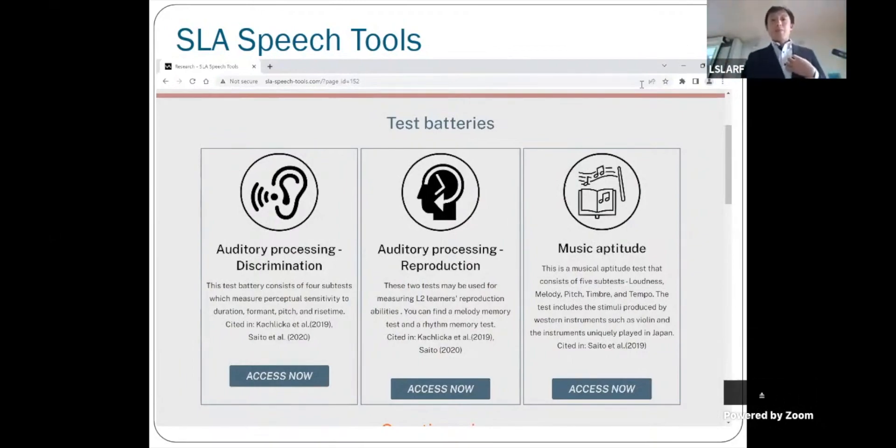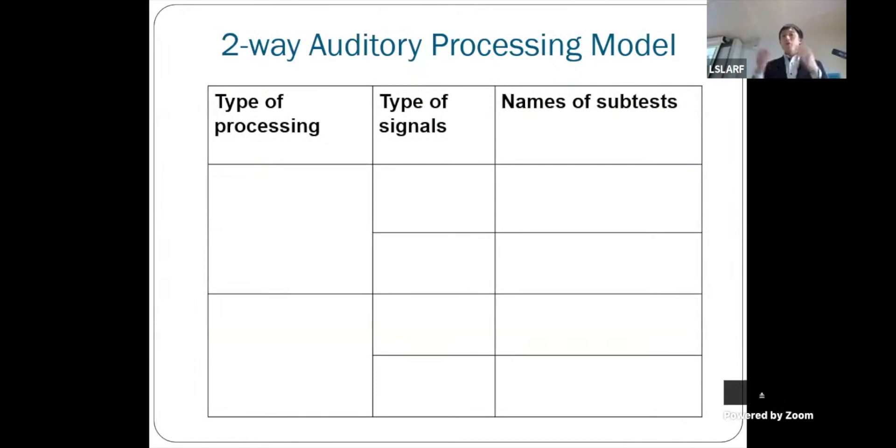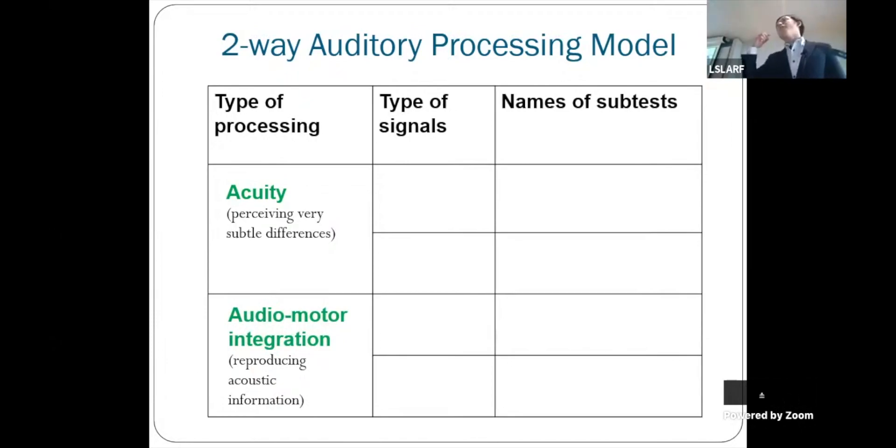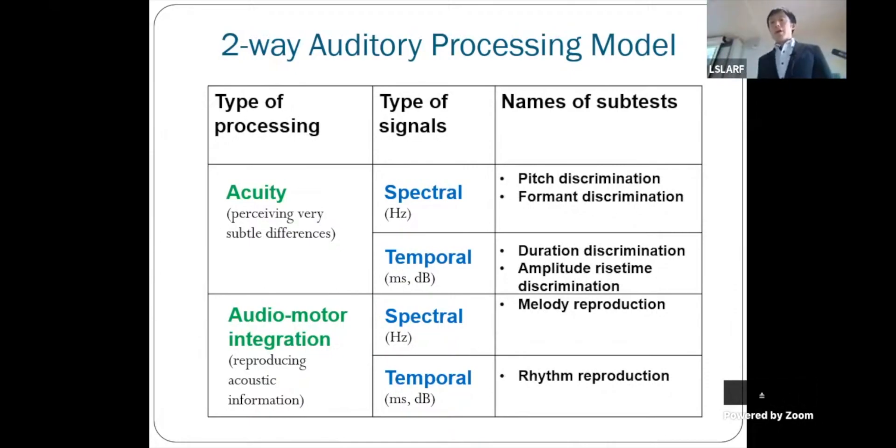Let's talk about the auditory processing test. We follow the two-way auditory processing model. First important distinction is the type of processing. That's acuity, how small differences you can hear in acoustic signals. The other is audio-motor integration, the ability you need to hear something and convert that into motor action. The other crucial dimension is the type of signals: spectral, frequency-related information, or rhythm, tempo-related information. Following this model, we created six individual tests that you can use right away.